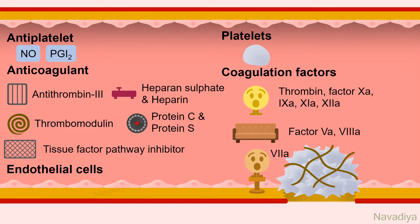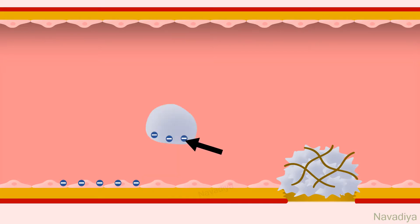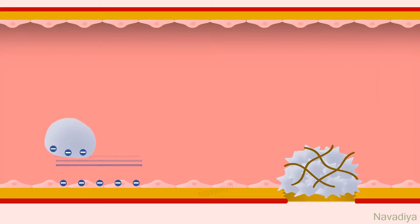Let's see how they do it one by one. First, endothelial cells — they have a negative charge on the surface. Now, the platelet is also negatively charged, so they are repelled from the endothelium, which prevents platelet adhesion.